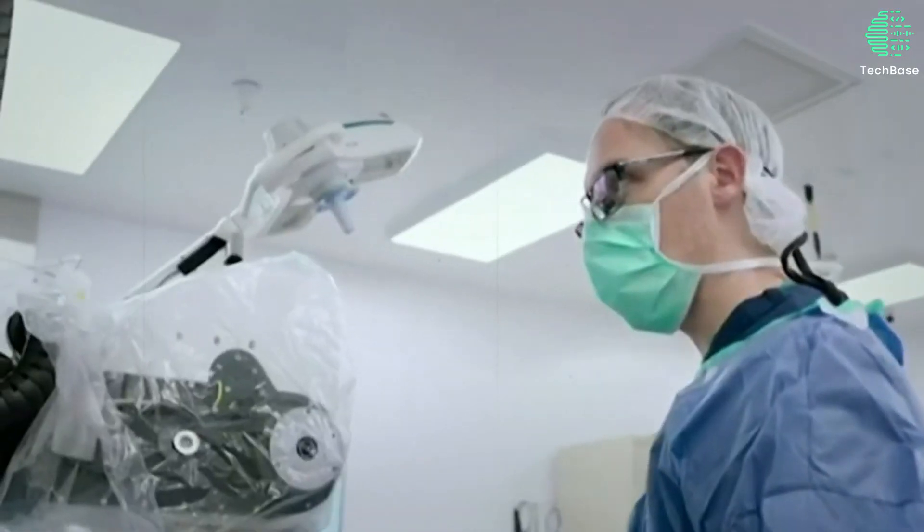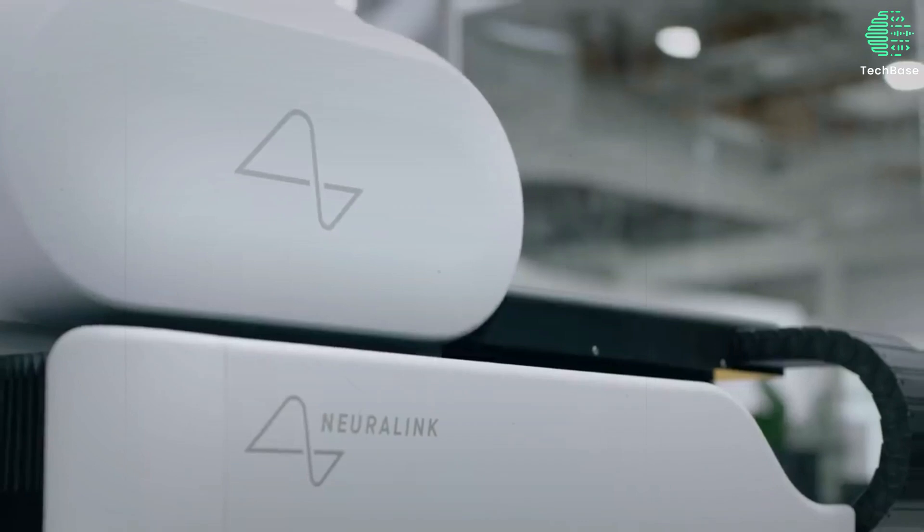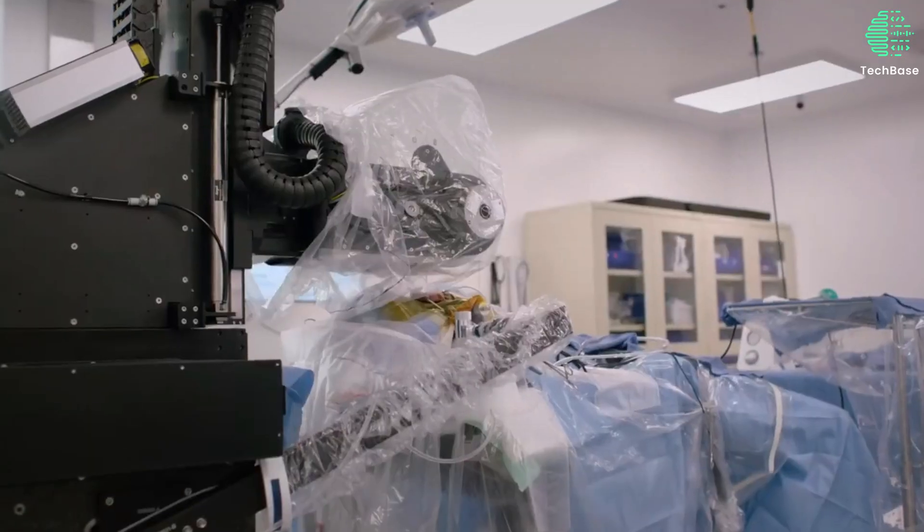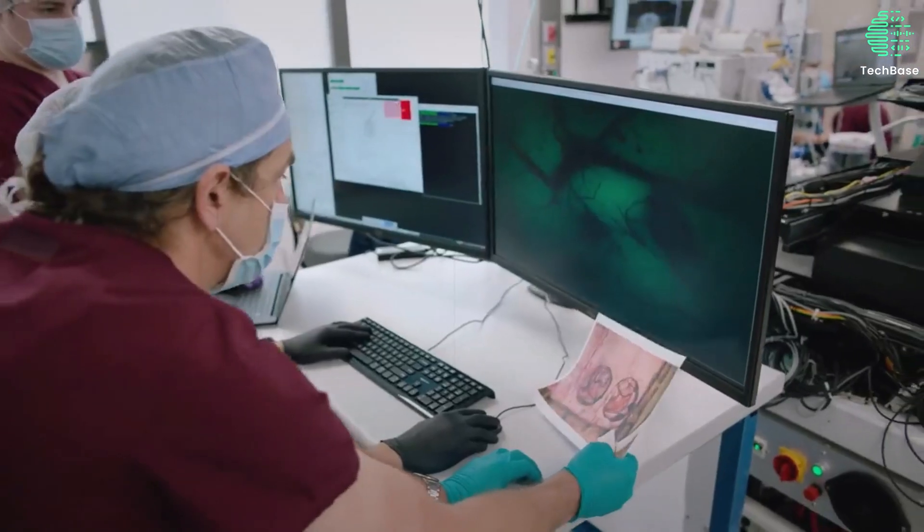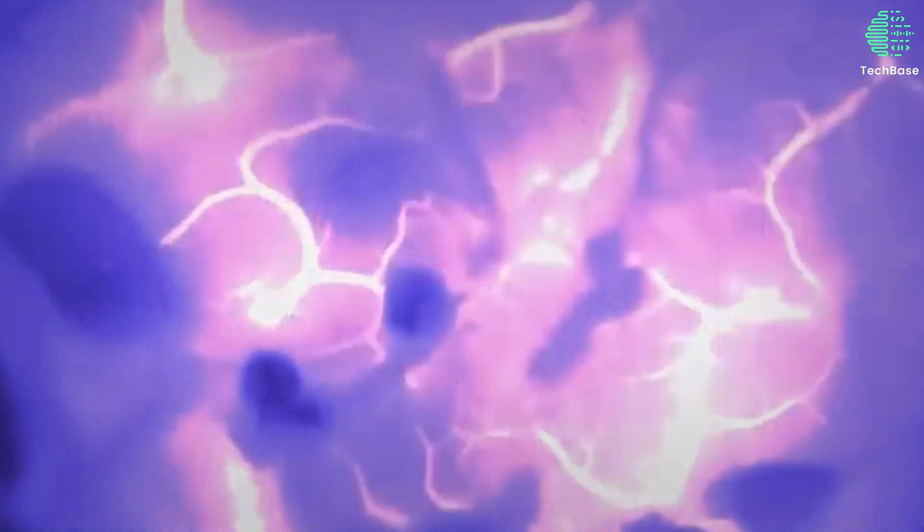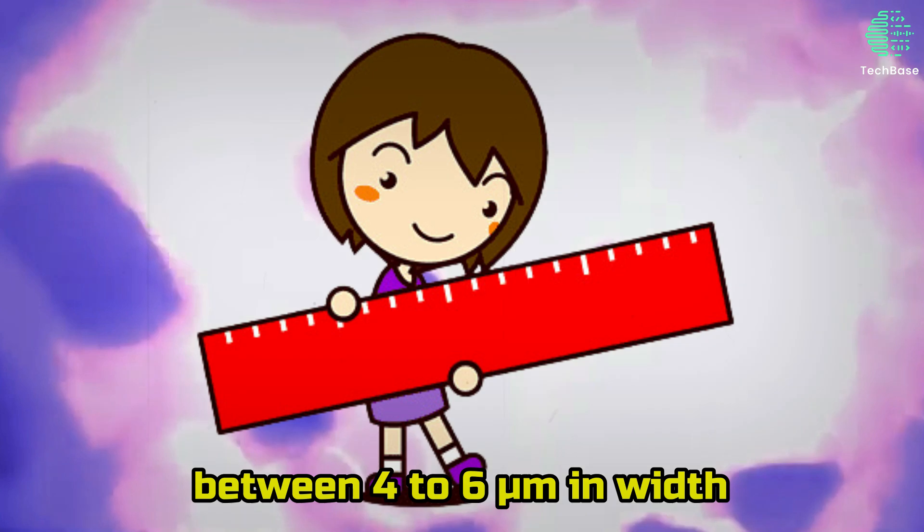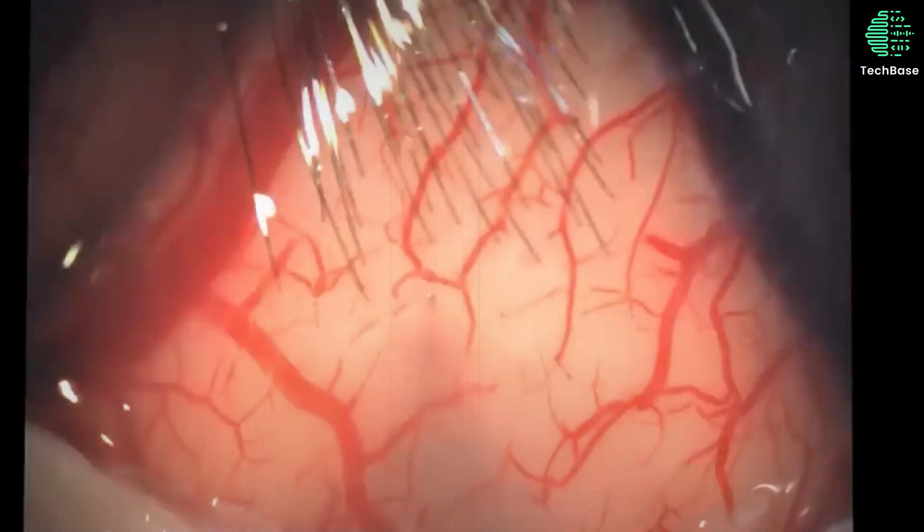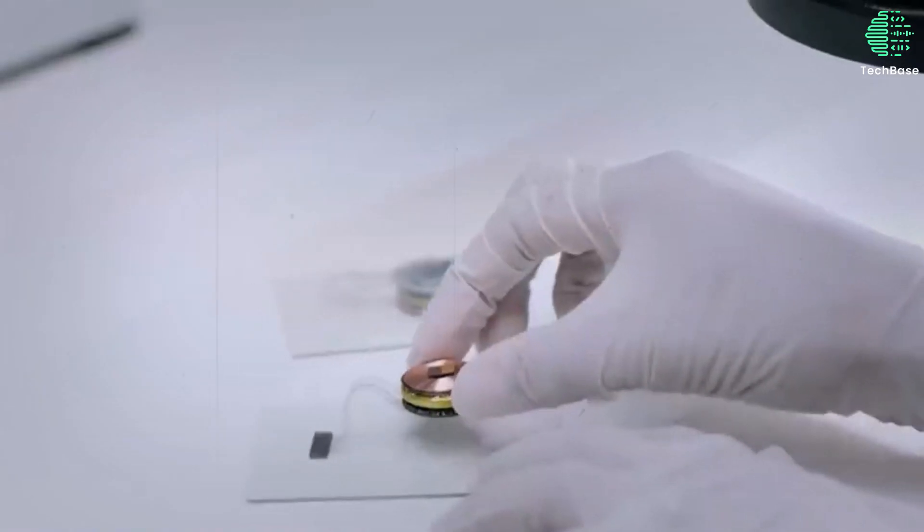By July 2019, Neuralink had made significant strides, announcing the development of a revolutionary sewing machine-like device capable of implanting ultra-thin threads into the brain. These threads, measuring between 4 to 6 micrometers in width, paved the way for groundbreaking experiments in interfacing with the human brain.